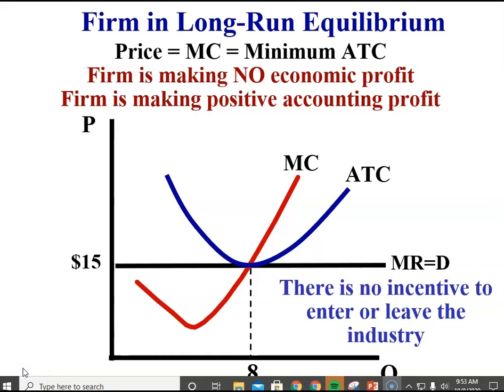So if the firm is in long run equilibrium, earning no economic profit, but they're making positive accounting profit, there's no incentive for other firms to either enter or leave the industry.